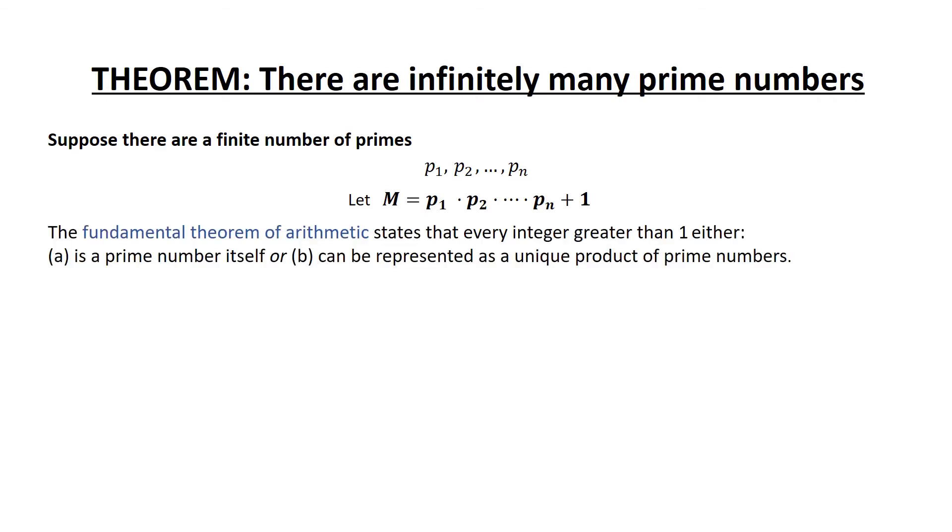The fundamental theorem of arithmetic states that every integer greater than 1 either is itself a prime number or can be represented as a unique product of prime numbers. Let's consider both cases.